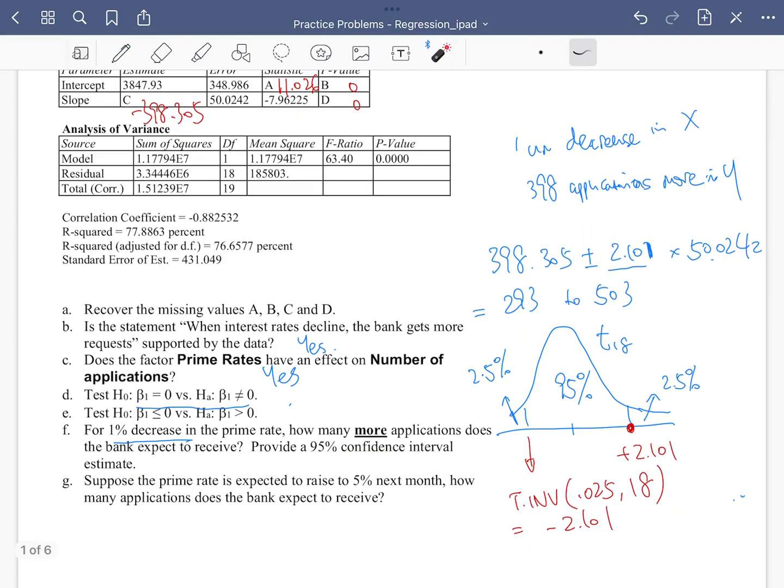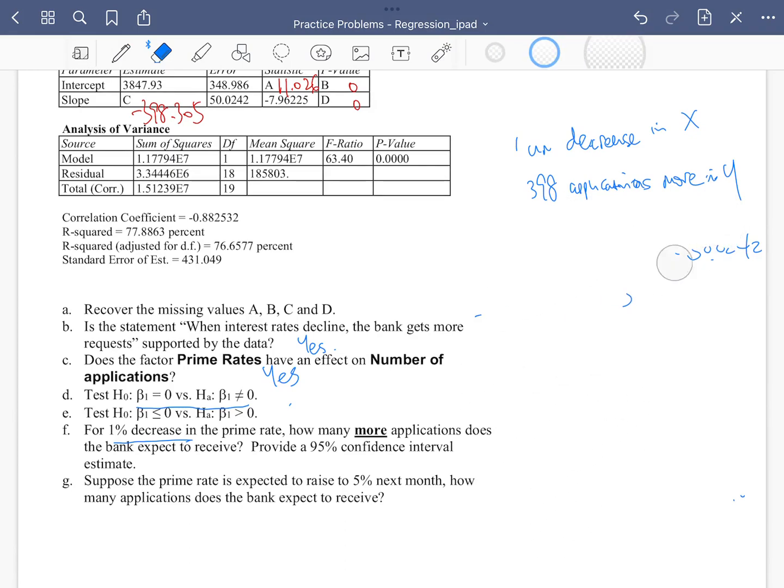Let's take a look at the very last question. The very last question says suppose the interest rate is expected to raise 5% more, what's going to happen to our applications? 5% increase would lead to 5 times this amount of decrease of applications. So I'm going to multiply those numbers, and that's about 1,991.525. So there's going to be 1,992 applications less. If the interest rate is raised by 5%, remember they have an opposite relationship, so the number of applications will be fewer.